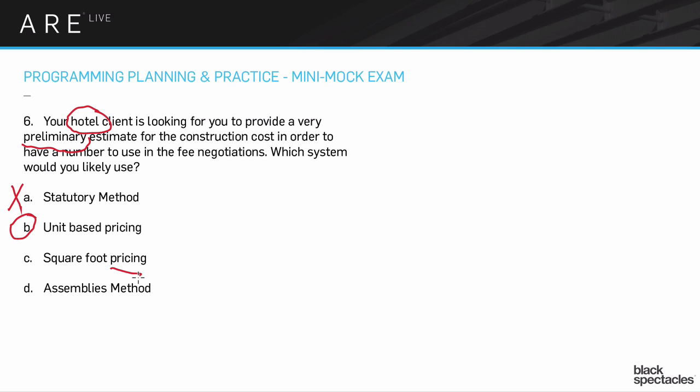Square foot pricing would be a totally reasonable answer — it's just that because of the hotel, unit-based pricing makes more sense for this specific situation. The assemblies method is farther down the road. That's when you're in design development and you know it's going to be a CMU backup with insulation, an air gap, and a four-inch brick in front. You know enough about the building to figure out the assemblies, do linear foot calculations per assembly, and add it all together — but there's no way you could do that at a preliminary moment. You just don't have enough information.